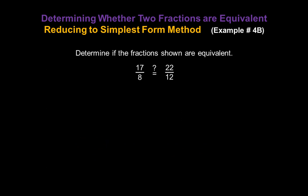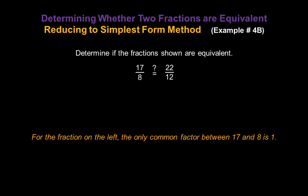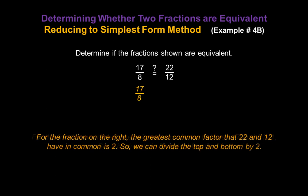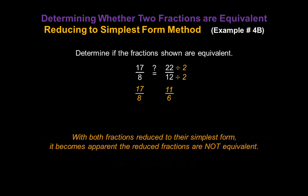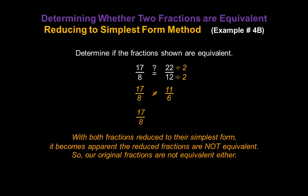Now let's work with the second example comparing 17 over 8 with 22 over 12. For the fraction on the left, the only common factor between 17 and 8 is 1, so that fraction is already in simplest form — write down 17 over 8. For the fraction on the right, the greatest common factor of 22 and 12 is 2, so divide top and bottom by 2: 22 ÷ 2 = 11 and 12 ÷ 2 = 6. With both fractions in simplest form, they are not equivalent — 17 over 8 is not equivalent to 22 over 12.